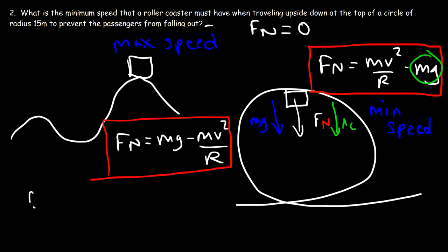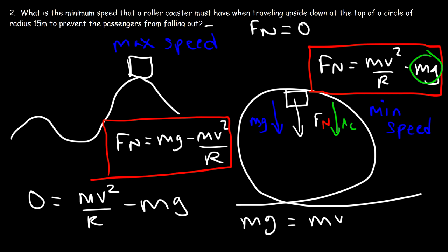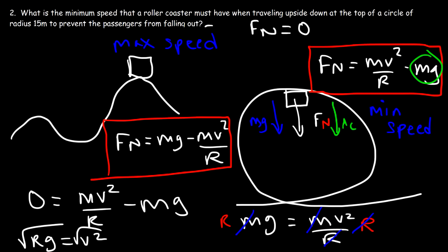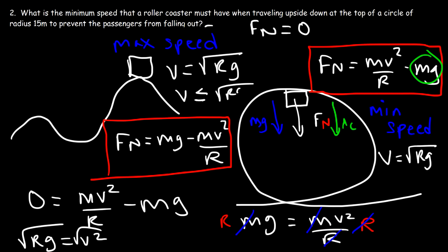Setting Fn = 0 for the roller coaster: 0 = mv²/r minus mg, so mg = mv²/r. Canceling mass and multiplying both sides by r gives v² = rg, so v = √(rg). For the box on the hill the maximum speed must be less than or equal to √(rg), while for the roller coaster the minimum speed must be greater than or equal to √(rg). The threshold formula is the same in both cases.